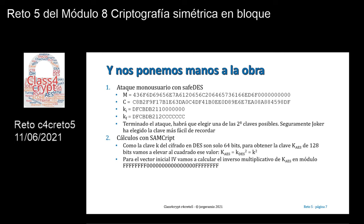Cálculos ahora con JumpKit. Como la clave K del cifrado en DES son solo 64 bits, para obtener la clave K del AES de 128 bits vamos a elevar al cuadrado. Es decir, la clave K del algoritmo AES es sencillamente la clave del DES elevada al cuadrado. Para el vector inicial IV, vamos a calcular el inverso multiplicativo de esa clave K AES en el módulo indicado con FF00FF, para obtener ese vector inicial.